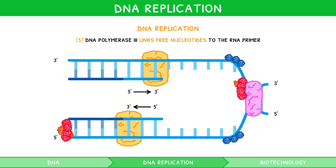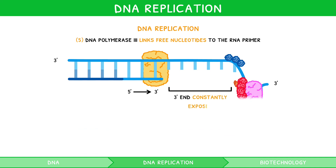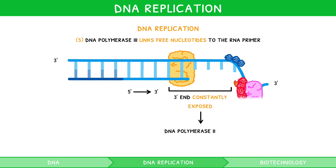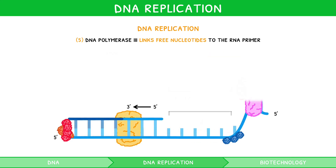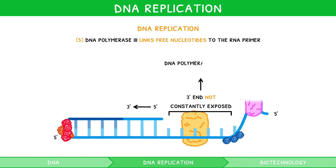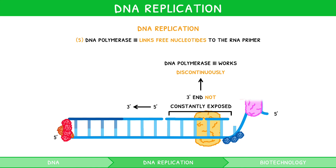In one strand, the 3' end is constantly exposed, so DNA polymerase 3 can work continuously. This is known as the leading strand, and it produces a single, long strand of nitrogenous bases. In the other strand, the 3' end is not consistently exposed, so DNA polymerase 3 works backwards in short segments. This is known as the lagging strand, and it produces multiple short strands of nitrogenous bases, known as Okazaki fragments.